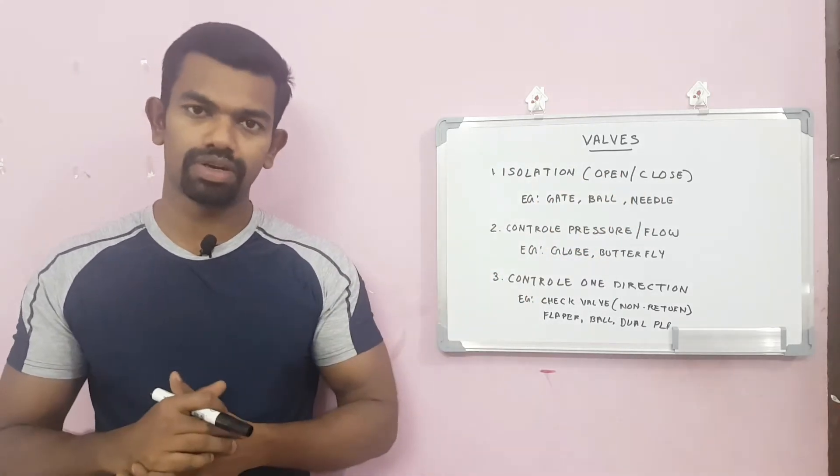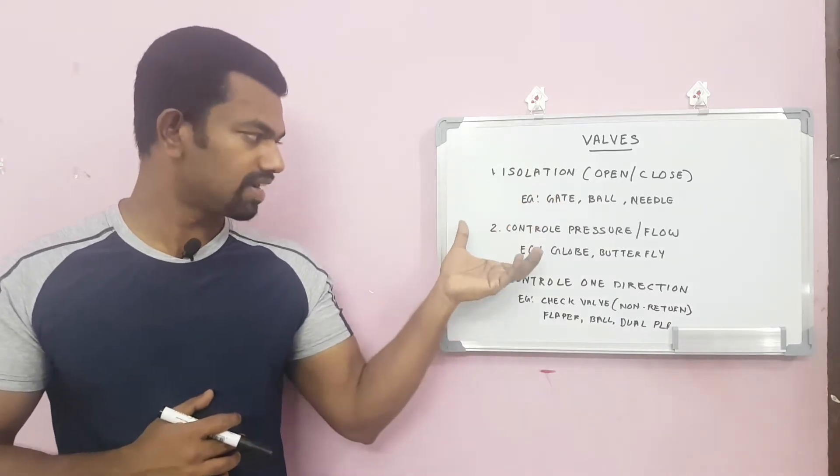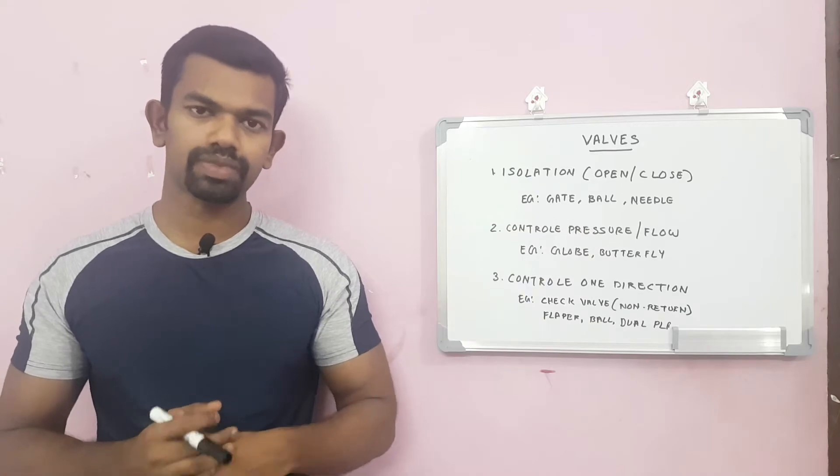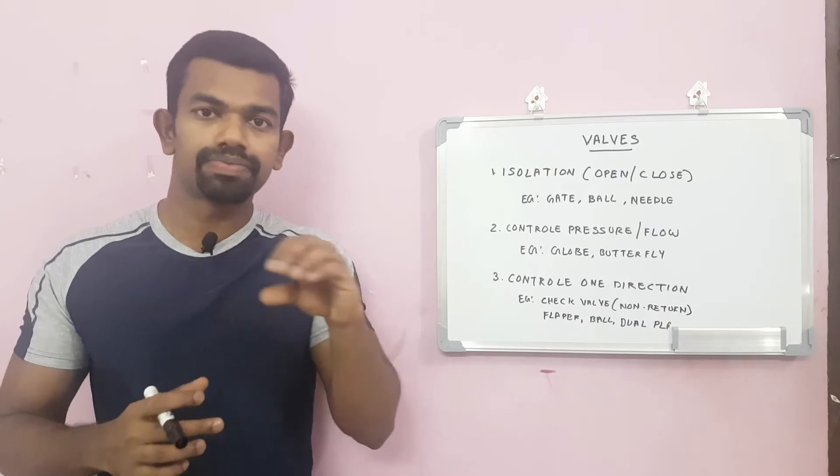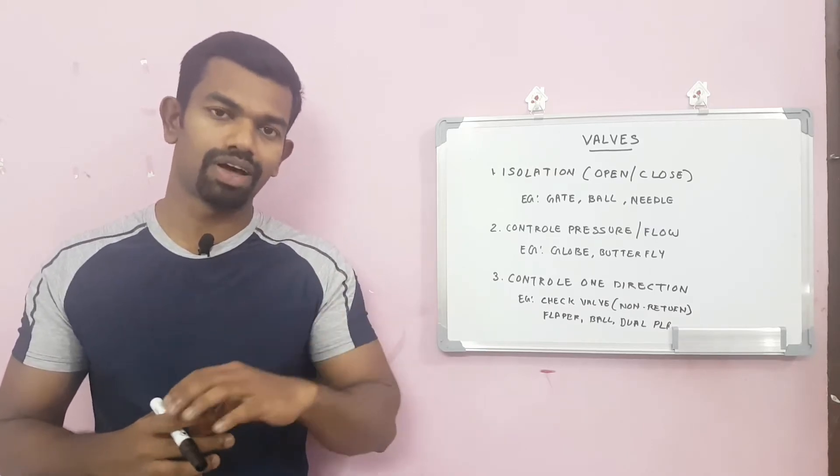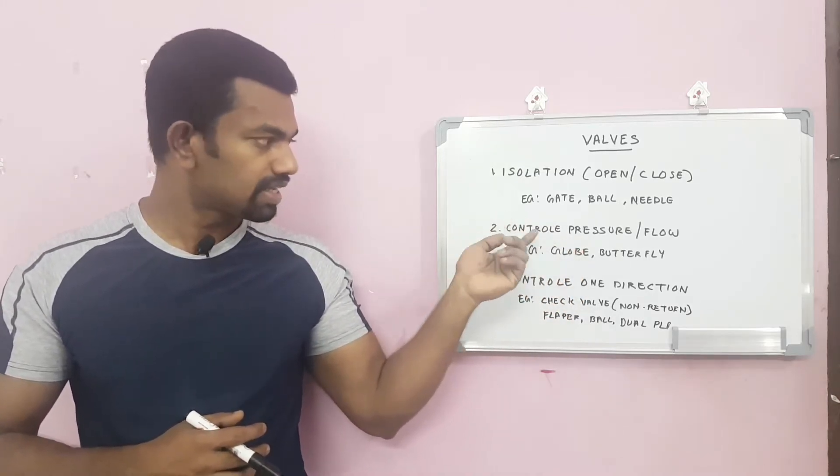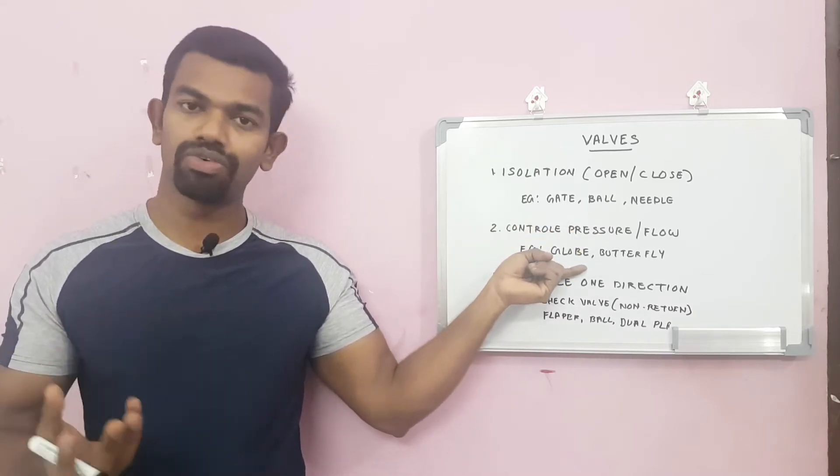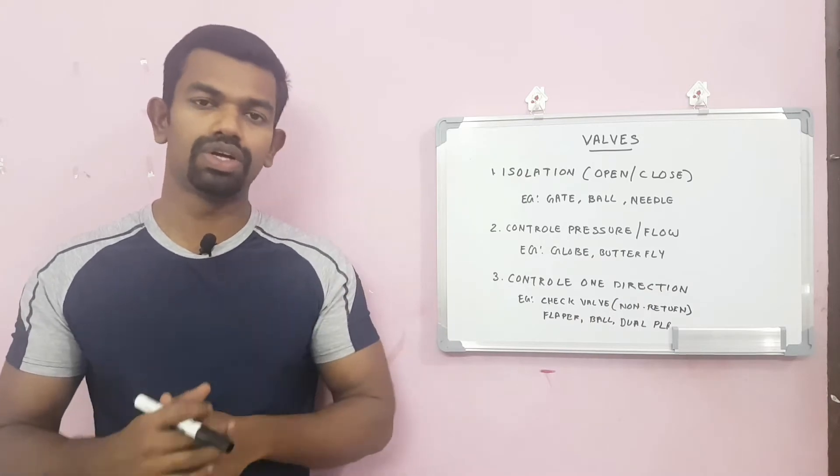The second is controlling the pressure or flow. Sometimes we need to regulate the flow, need to take only a particular capacity, particular amount of fluid through these valves. In this case we use the control valve for controlling the pressure. These are globe valves and butterfly valves, which will allow the partial flow.